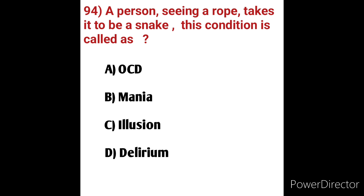Question 94: A person seeing a rope takes it to be a snake — this condition is called? Options: A) OCD, B) mania, C) illusions, D) delirium. Illusion is a disorder where a real object is present but perceived by the patient as a completely different object — for example, taking a rope to be a snake. Option C, illusions, is the correct answer.